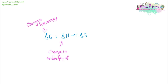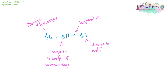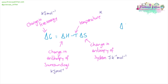Delta H tells us the change in enthalpy. T is our temperature. Delta S is going to be our change in entropy or disorder for the system. Our units are really important here. Delta G is generally measured in kilojoules per mole, as is delta H. Temperature is measured in Kelvin, whereas delta S is in joules per Kelvin per mole, so you may have to convert between joules and kilojoules.